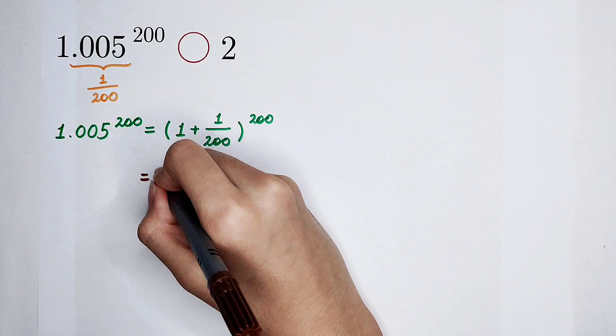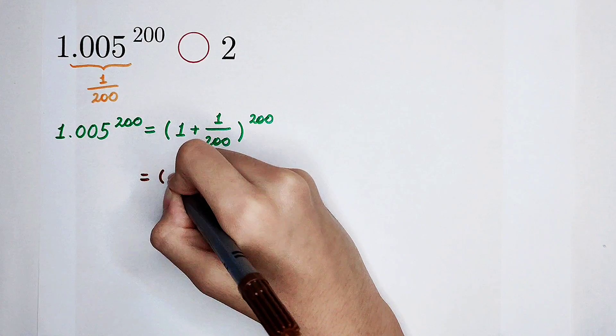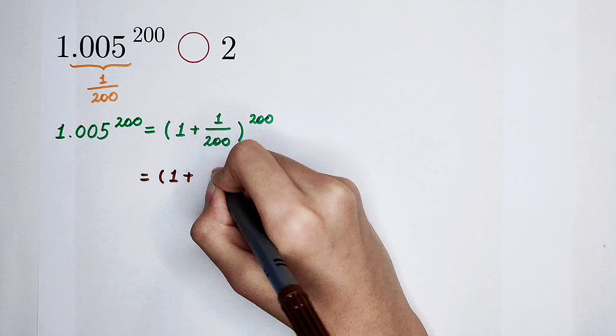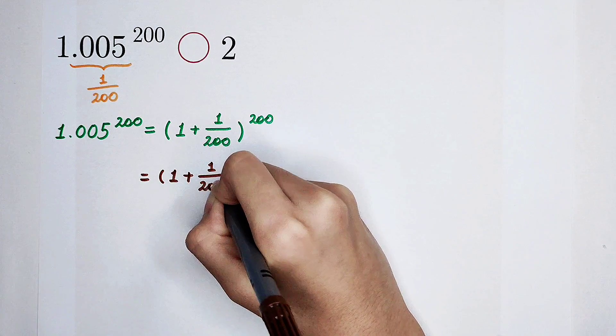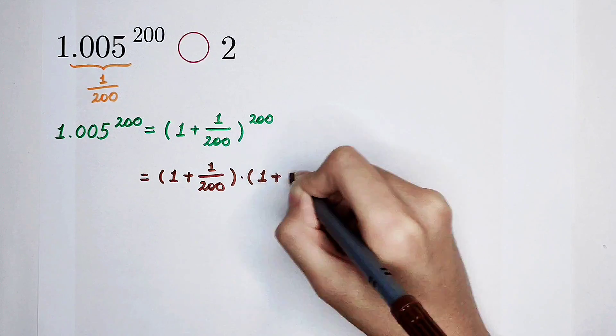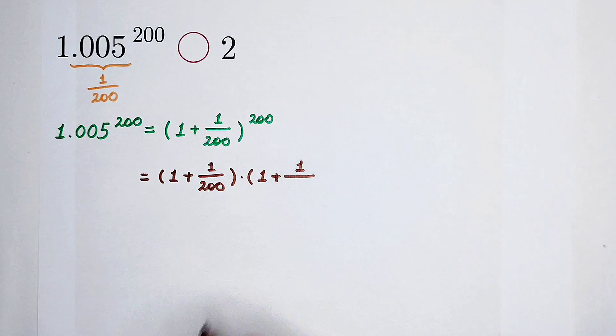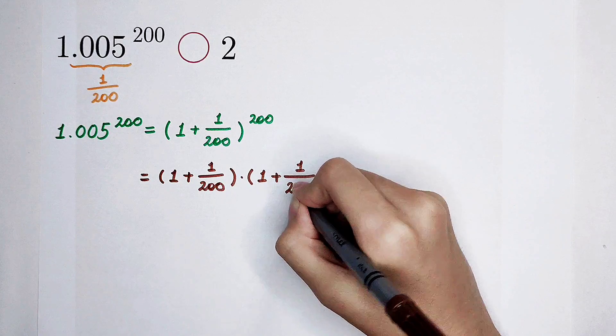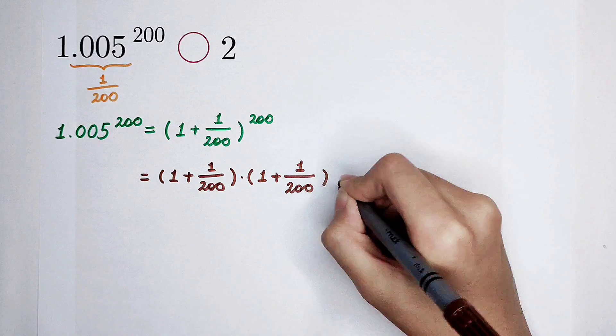Now, I'm going to write some of them. The first one, I'm going to write it down. The second one, these 200 numbers are the same: 1 plus 1 over 200, so just write some of them.